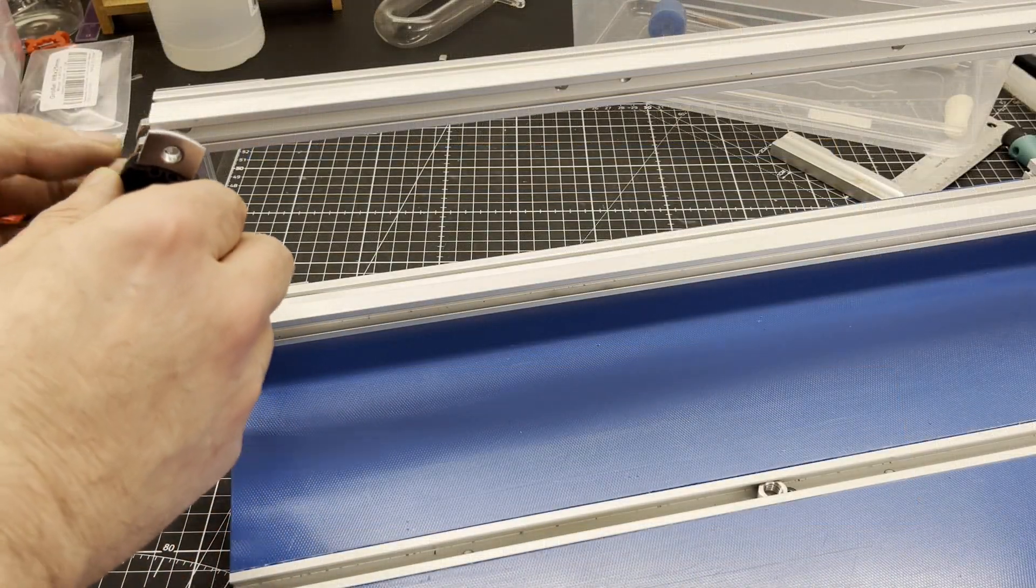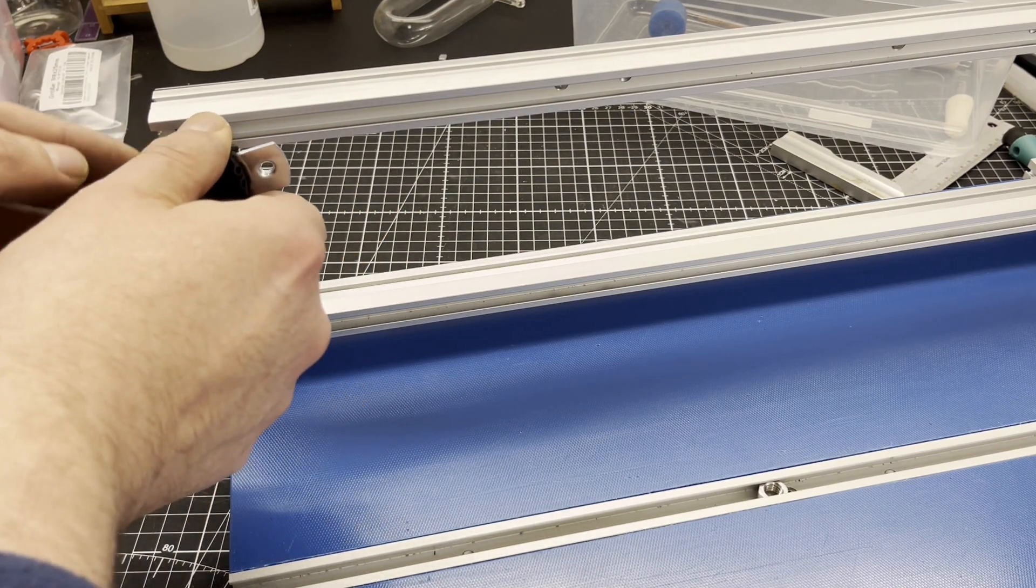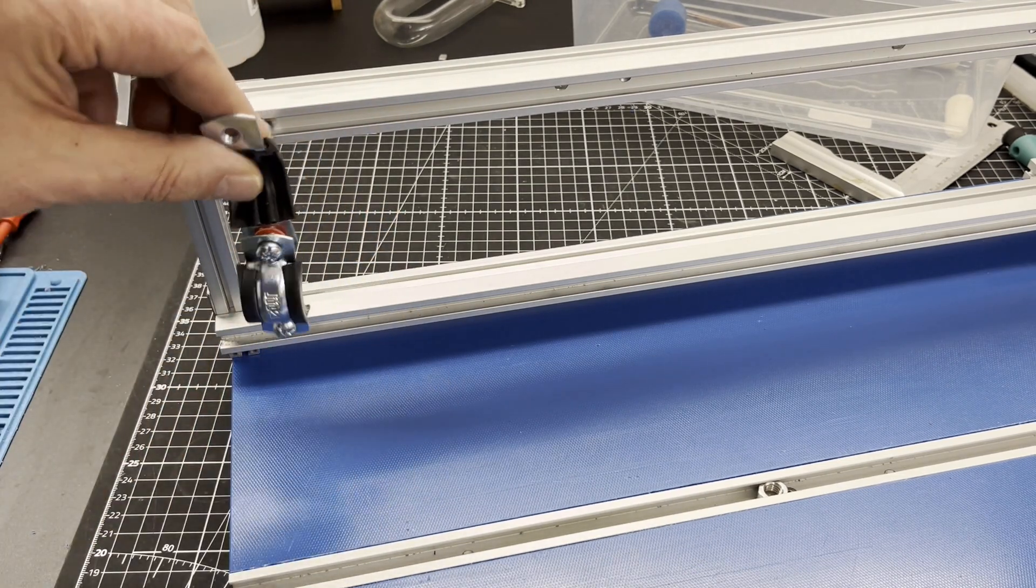Pipe clamps from the DIY store were used to attach all the glassware. They are much cheaper than lab clamps and are available for every pipe diameter.